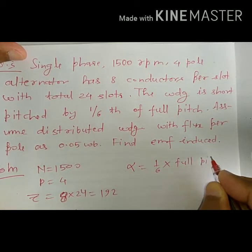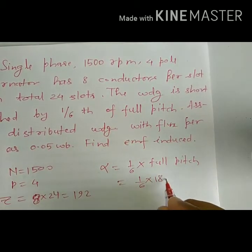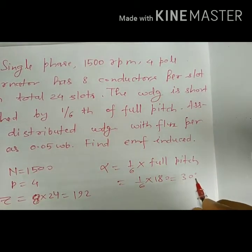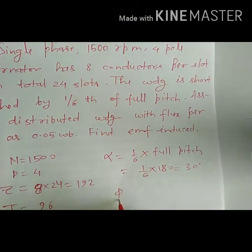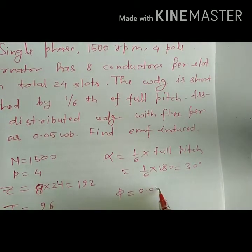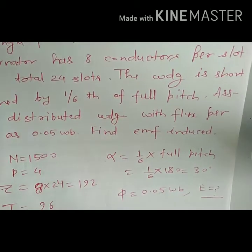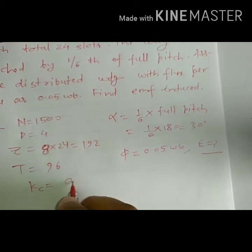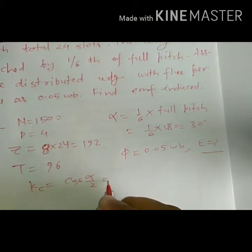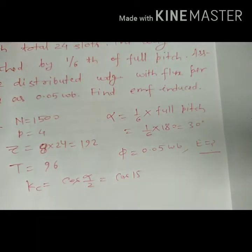Alpha is 1/6th of 180, which gives 30 degrees. The winding is distributed and flux per pole is also known as 0.05 Weber. EMF is expected. First, find Kc: Kc equals cos(alpha/2), that is cos(15 degrees).